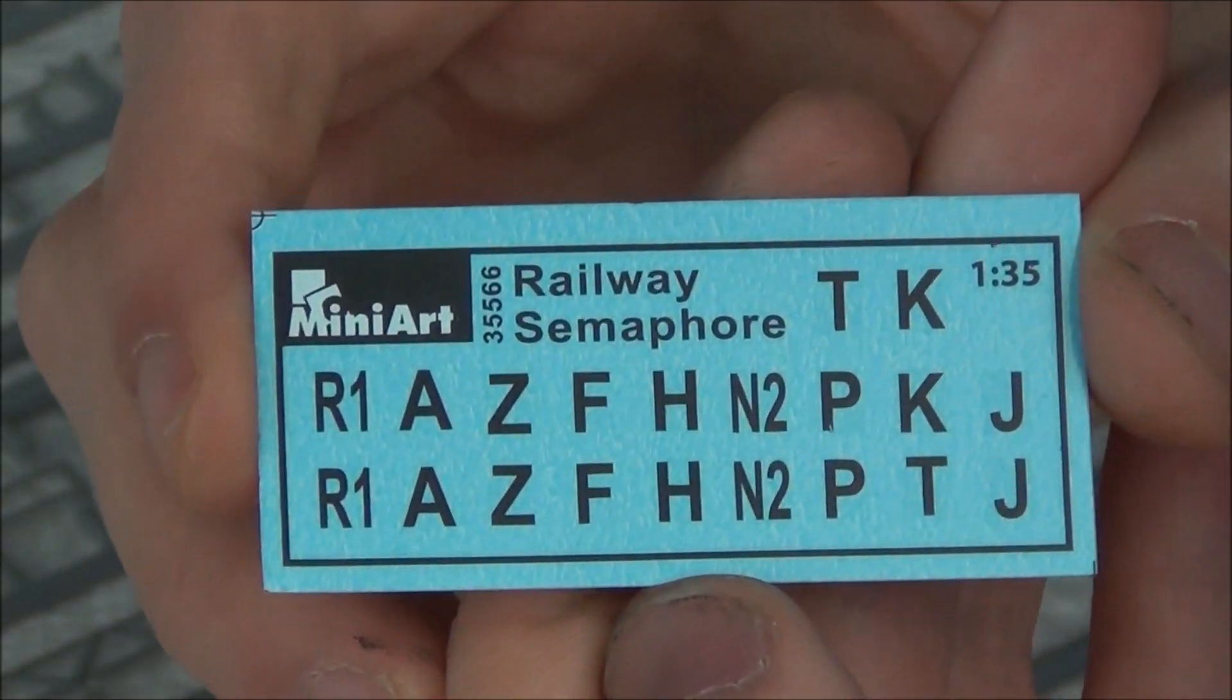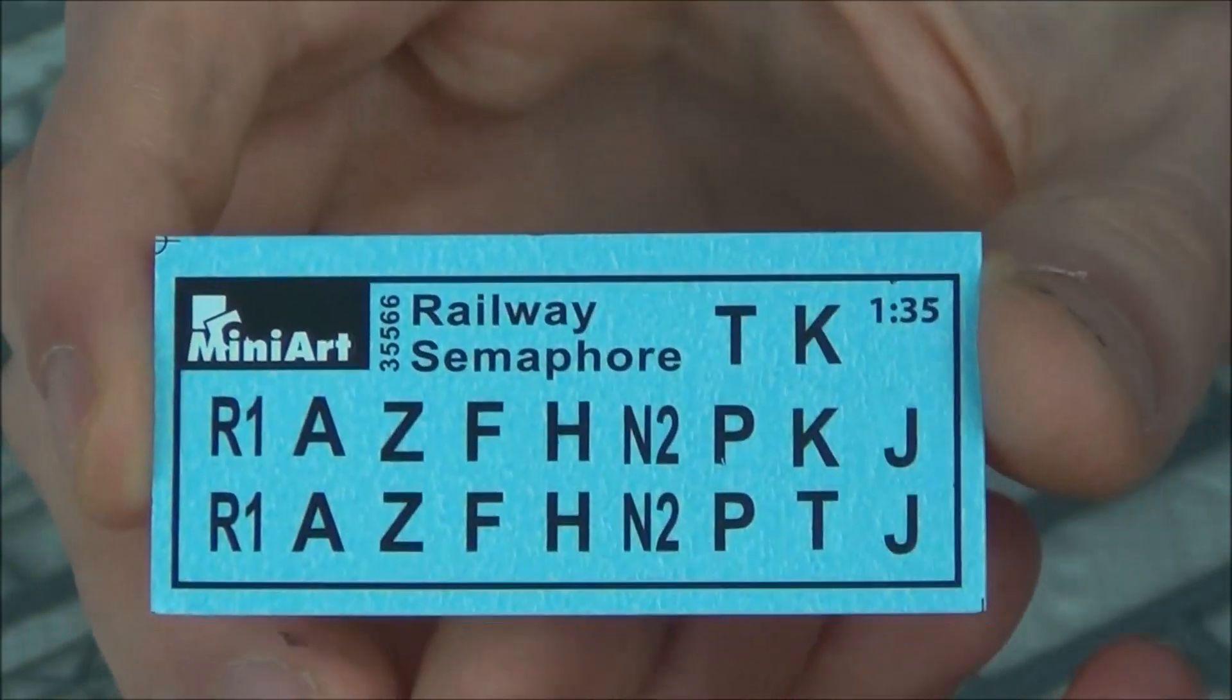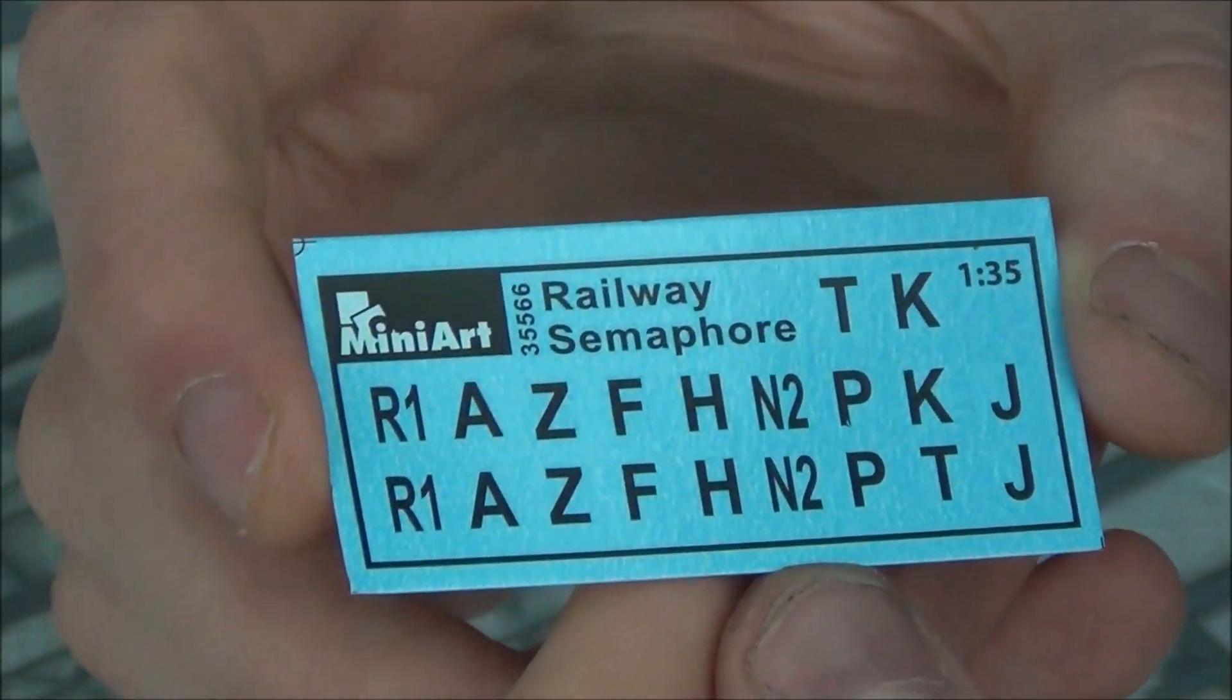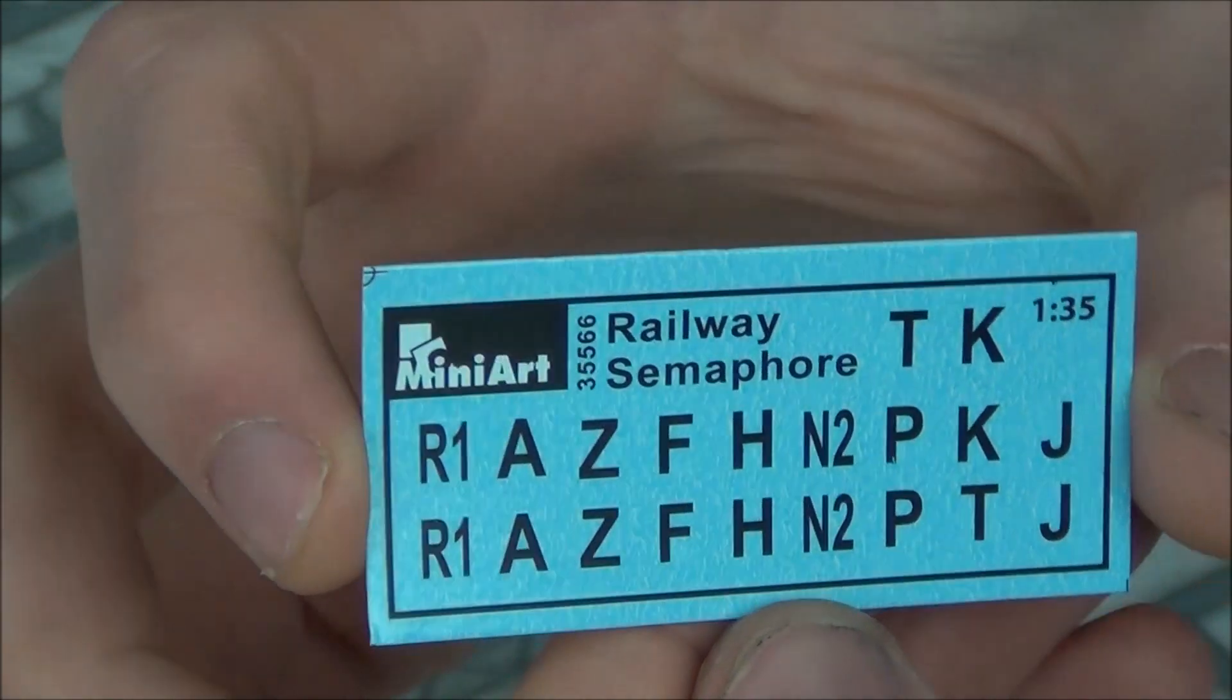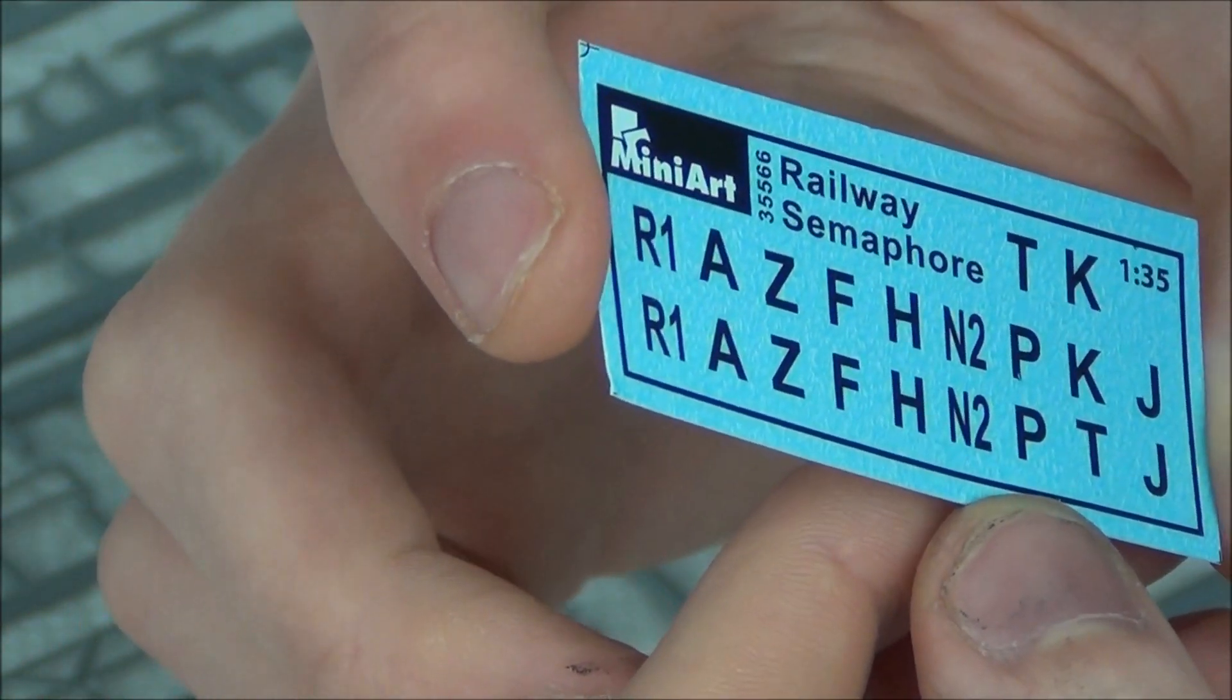The decals just have some numbers on them. It's probably just a standard railway system. I've never tried MiniArt decals before, so I don't know if they're good. But I assume they're probably pretty good because they're like a modern decal and they look pretty thin.